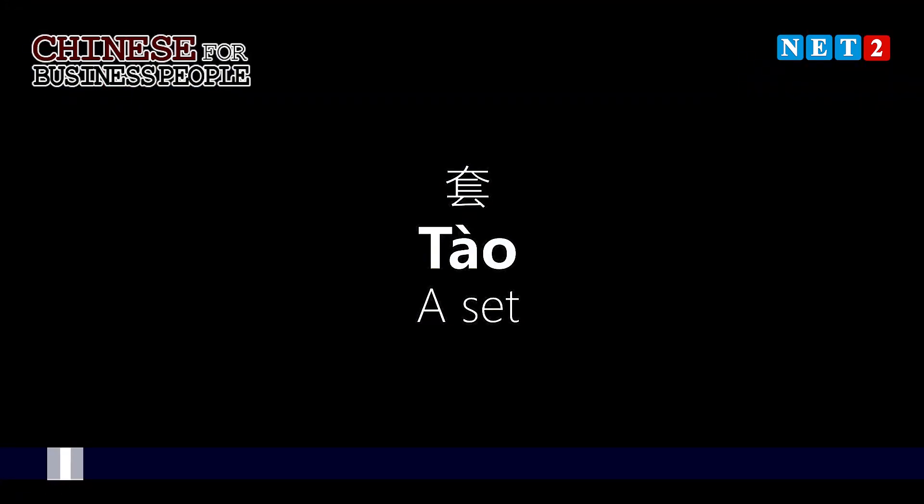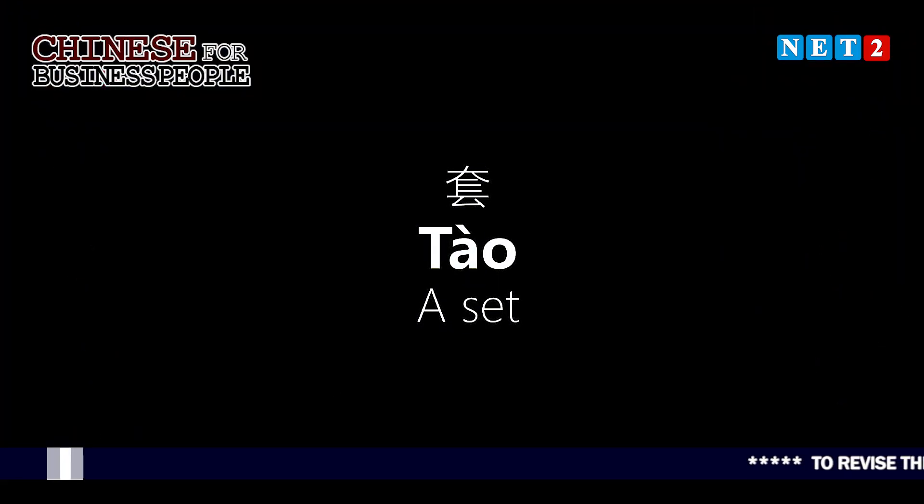During this episode we are going to take another measure word, which is 'tao'. We'll talk about the clothing items that it classifies. 'Tao' means a set. Anything that comes in a set — not just clothing items, but anything at all that comes in a set — we use the word 'tao' to classify it. Here we are talking about clothing items.